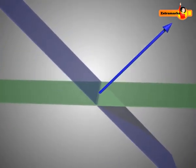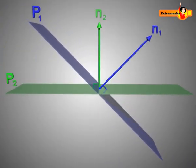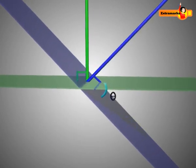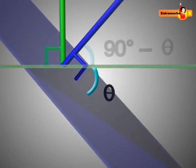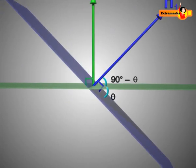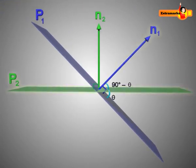Let vector N1 and vector N2 be the normal vectors to the planes P1 and P2 respectively. Let theta be the acute angle between the planes, then 90 degrees minus theta will be the angle between plane P2 and vector N1.